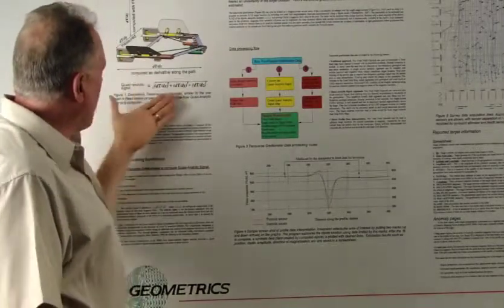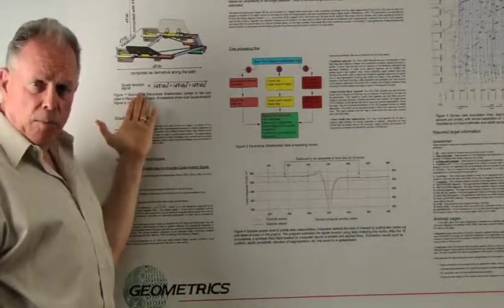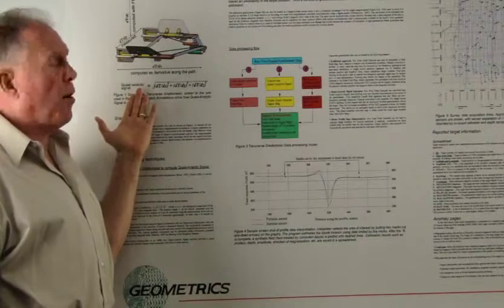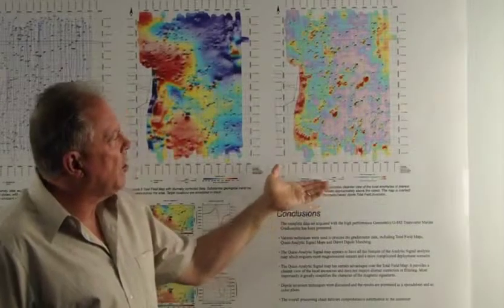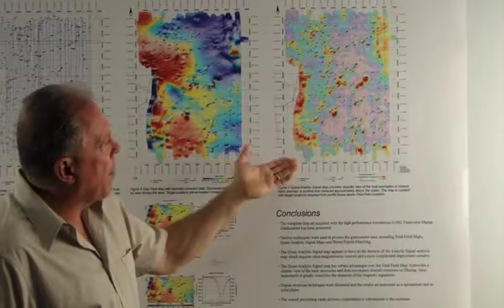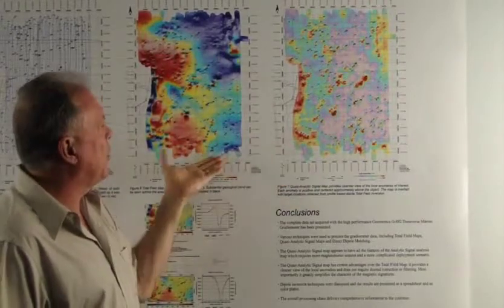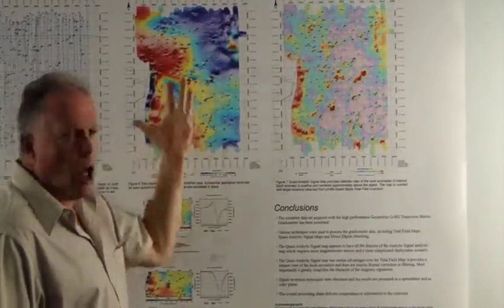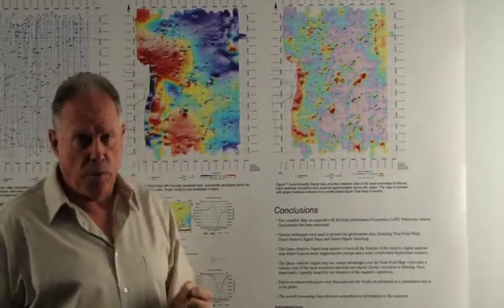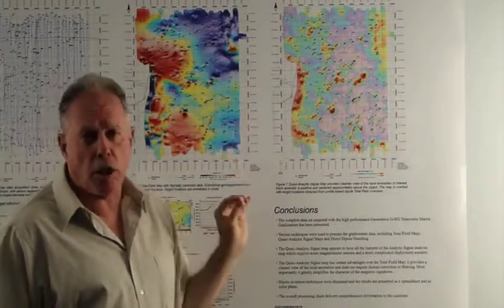Once we get the quasi-analytic signal, the next part of the data processing is to make an analytic signal map. Here we see the quasi-analytic signal map, which is much different than the total field map. What we see immediately is that the geology has been essentially removed, so now we are only seeing the high frequency anomalies associated with targets.